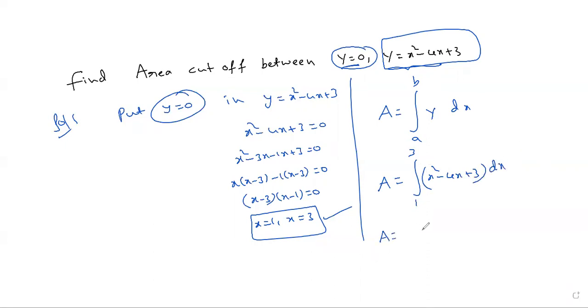Okay? Just apply integration. x squared becomes x cubed by 3, minus 4x squared by 2, plus 3x. Apply the integration boundary 1 to 3.